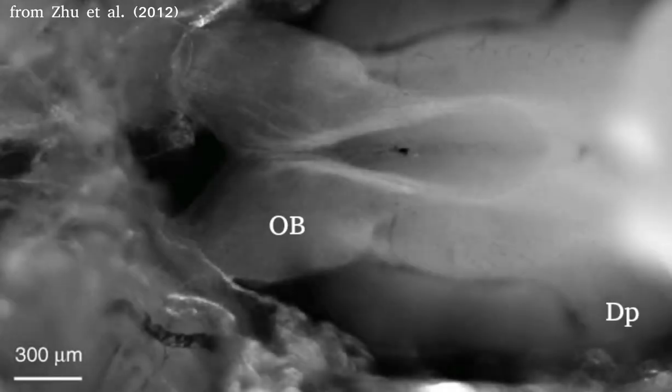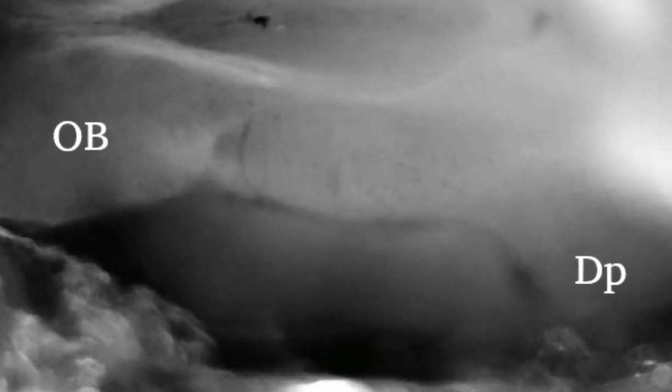In this ex vivo preparation, the brain is exposed from its ventral side. The nose and the olfactory nerve remain intact. It is crucial to remove the dura covering DP to prevent clogging of the pipette.